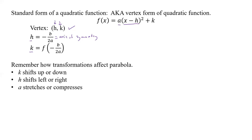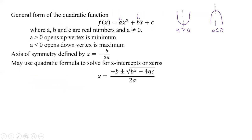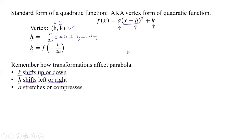We have to remember how transformations can affect our parabola. k shifts up or down depending on if it's positive or negative. h is going to shift left or right, again depending on if it's positive or negative. And a is going to do our stretching or compressing depending on which value we have. These are all things we can get from the standard form, or if we have the general form, we can get to the standard form and figure that out as well.